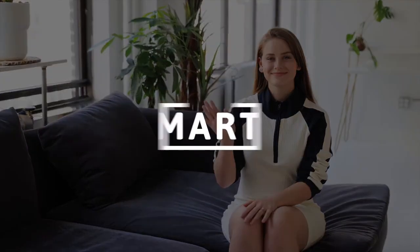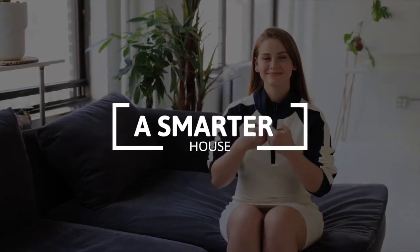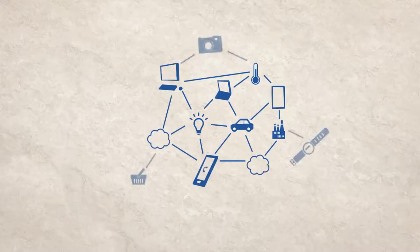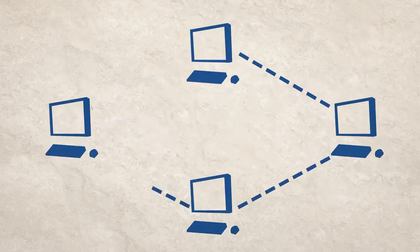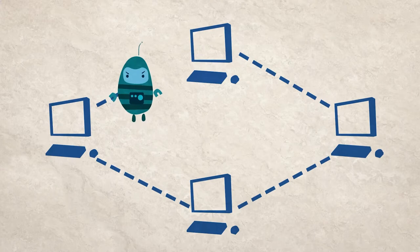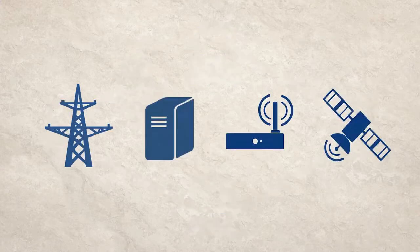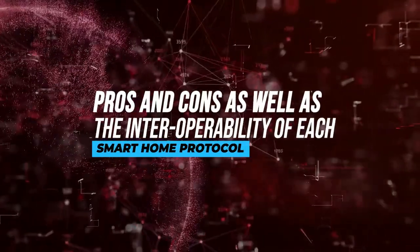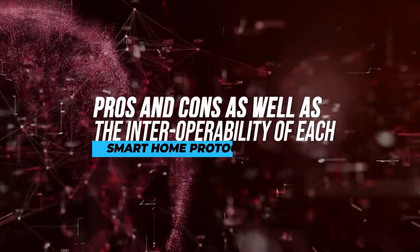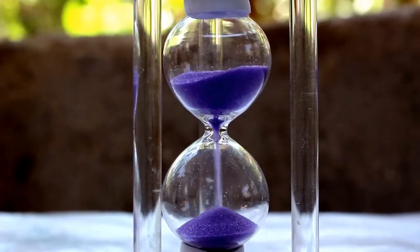Hey guys, welcome to our channel, A Smarter House, your permanent solution for all your smart home queries and problems. A smart home protocol is a language used by gadgets to communicate with one another. They may now share information and control each other's operations. Today, we'll talk about these different smart home protocols used in the major smart home hubs. We'll discuss the pros and cons, as well as the interoperability of each smart home protocol. So, without wasting any time, let's get started.